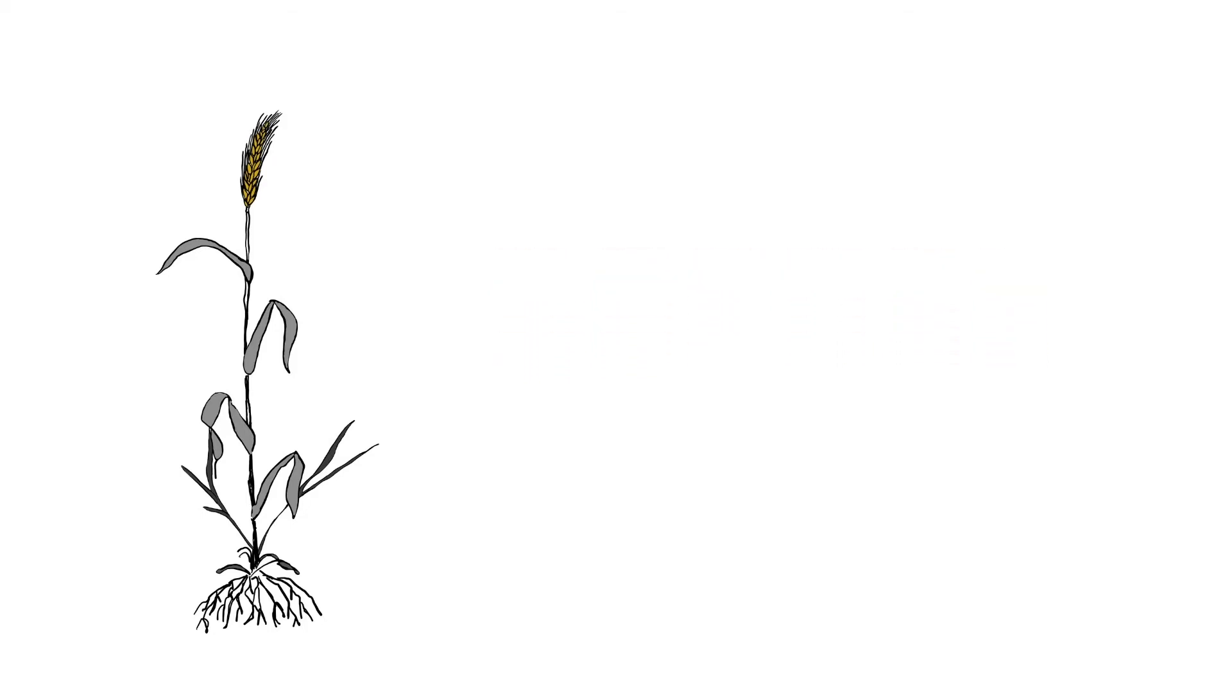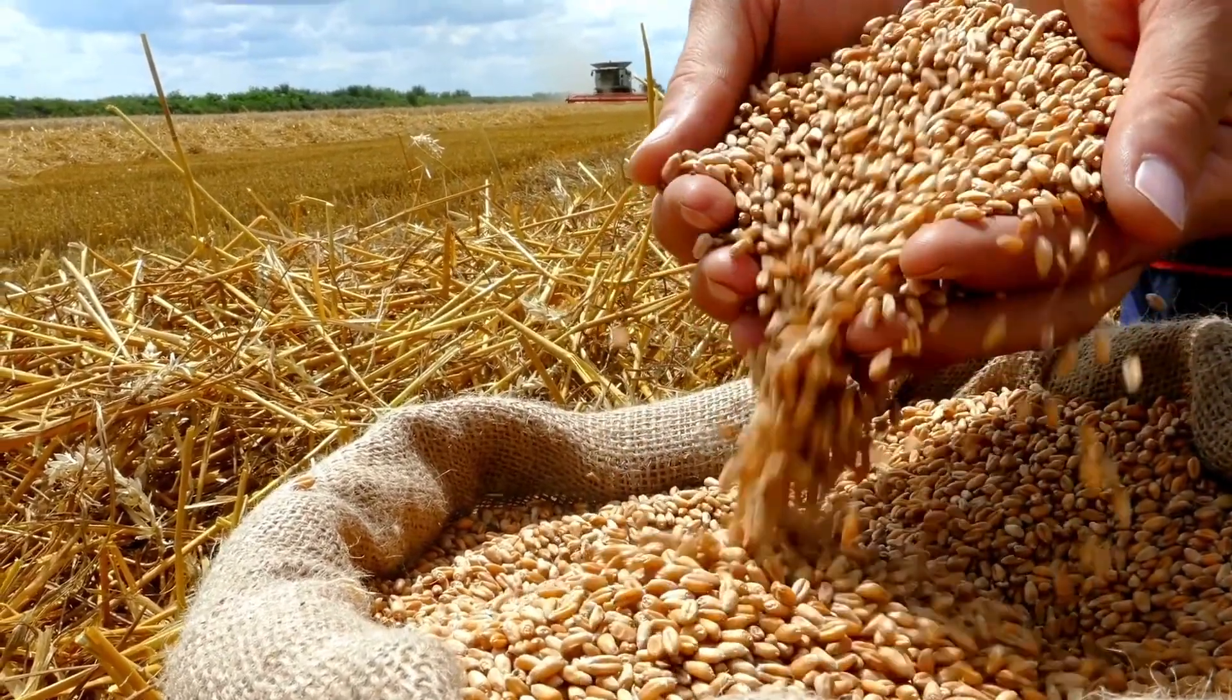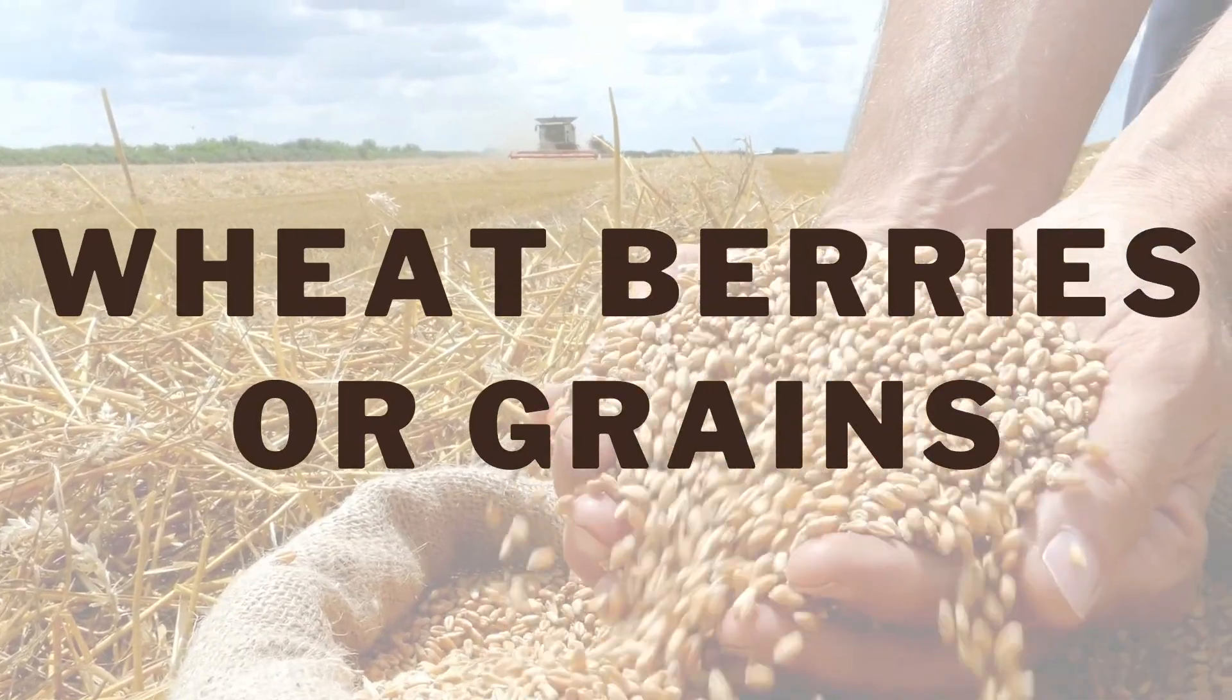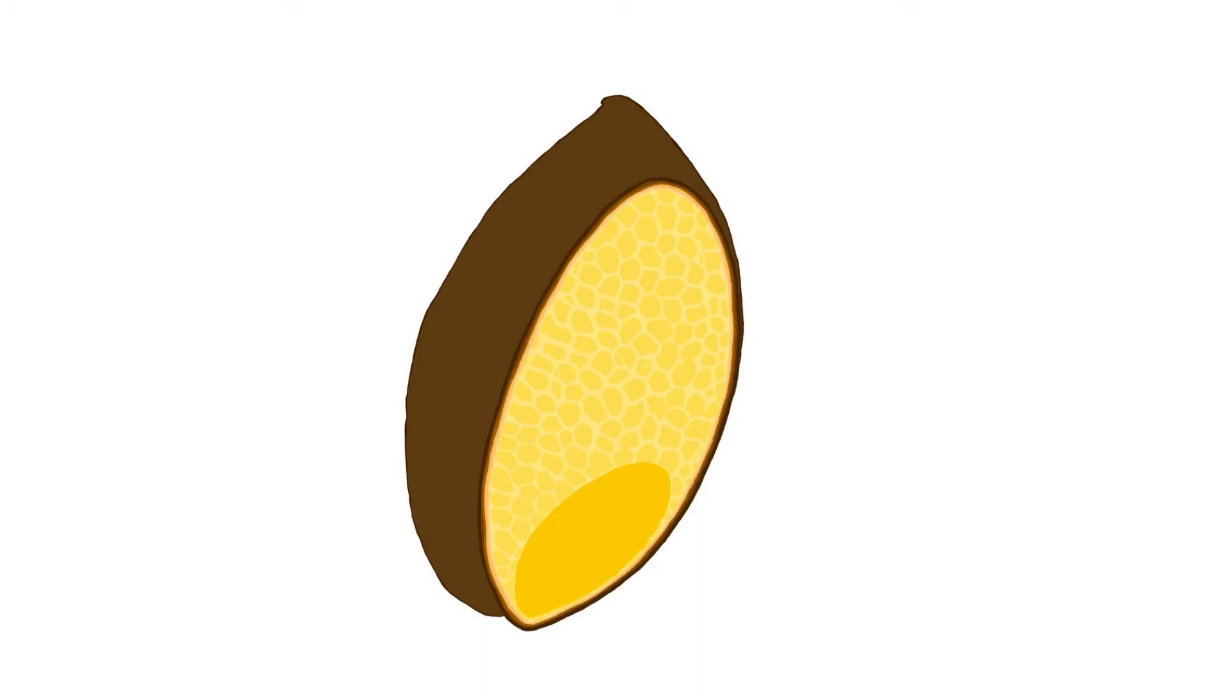The kernels are the seeds and are harvested to make flour. Wheat kernels are also called wheat berries or grains. There are three main parts in a wheat kernel: the endosperm, bran, and germ.